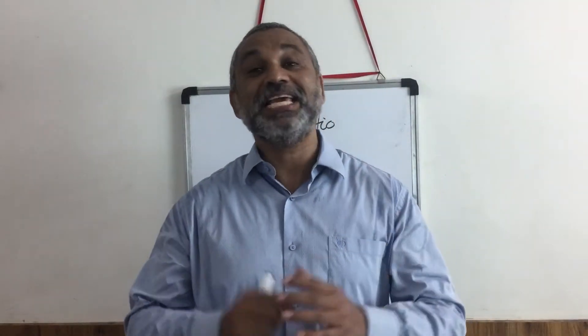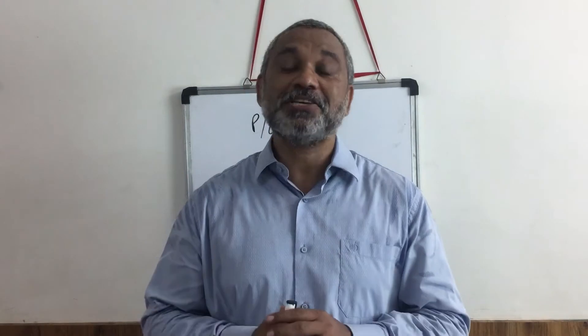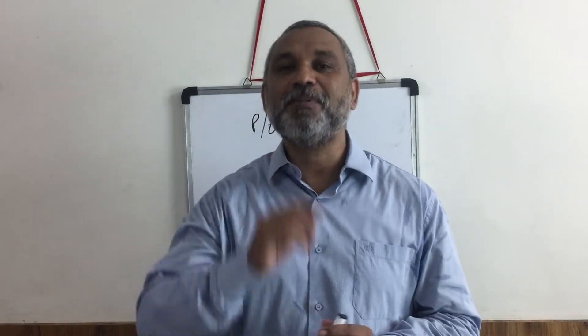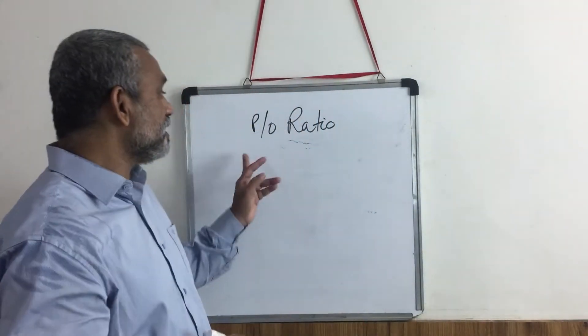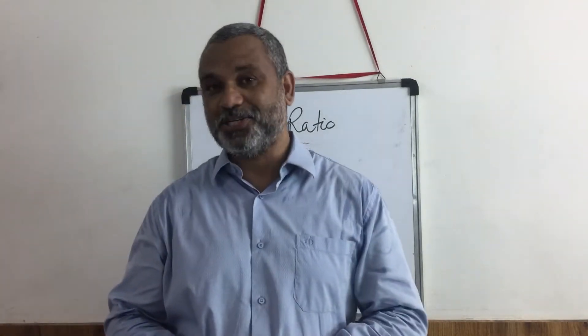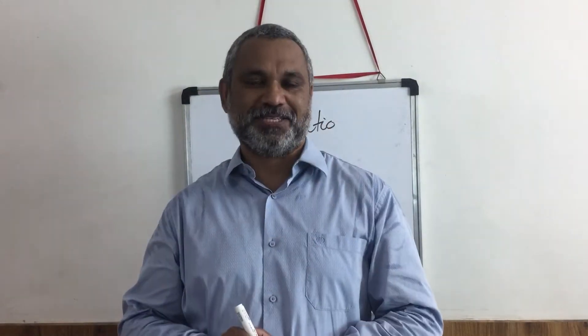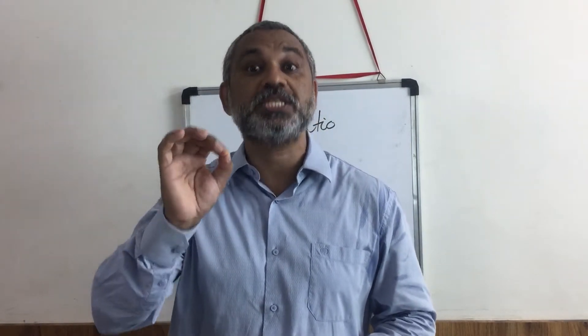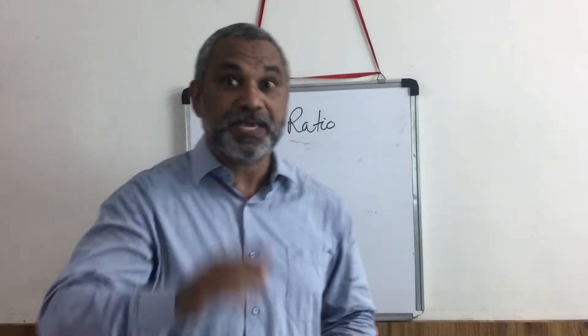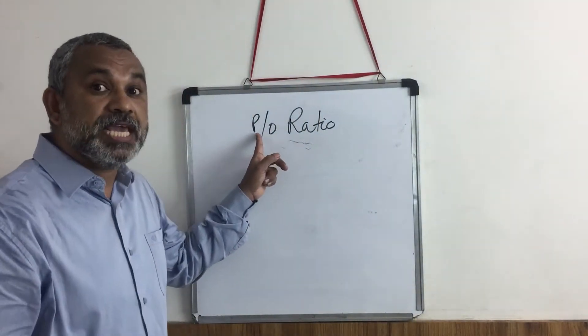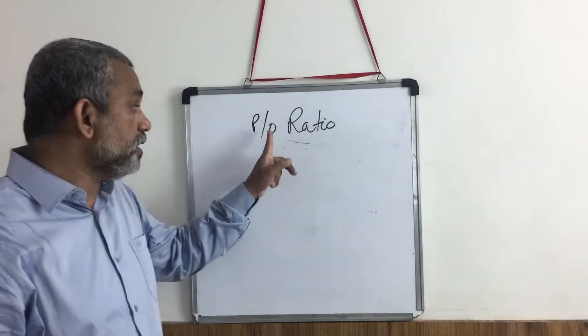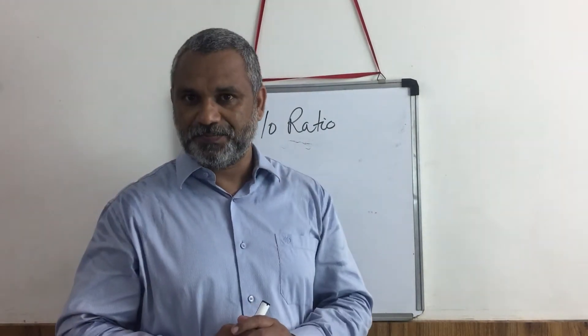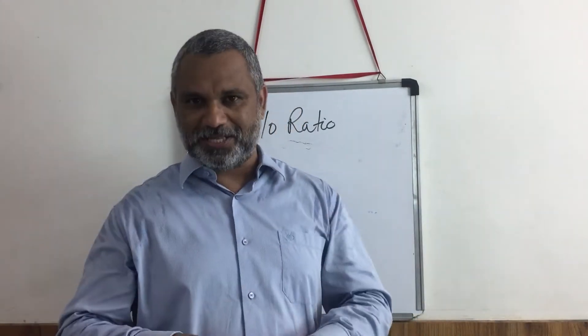Often, when we deal with oxidative phosphorylation, we come up with a question: what is P by O ratio? It is a very interesting concept. P by O ratio stands for how many ATP molecules are produced per electron pairs transferred. How many ATP molecules are formed per pair of electrons transferred — how to calculate this?